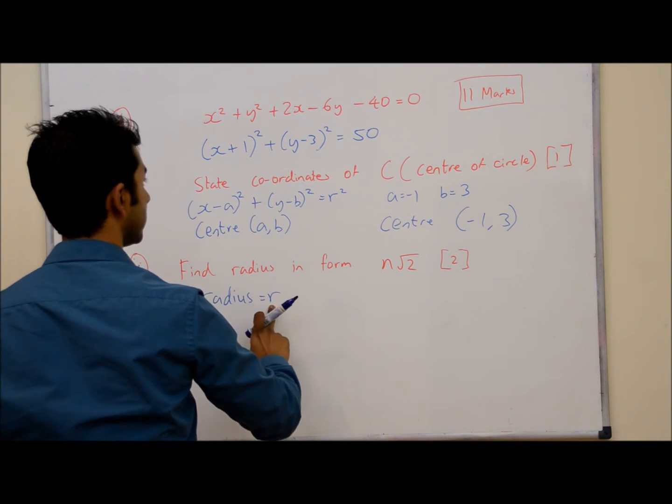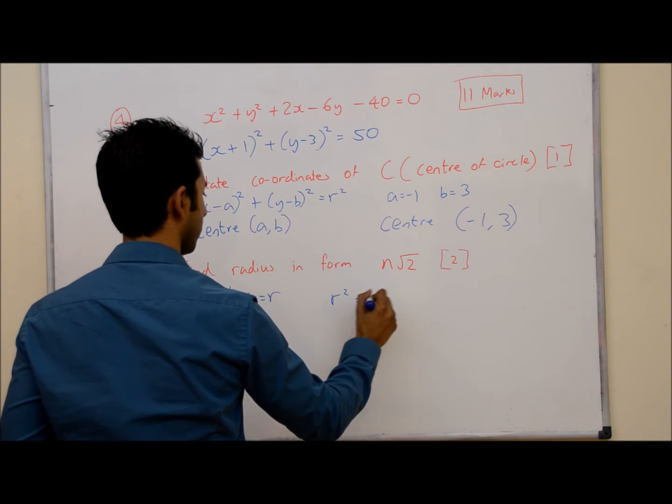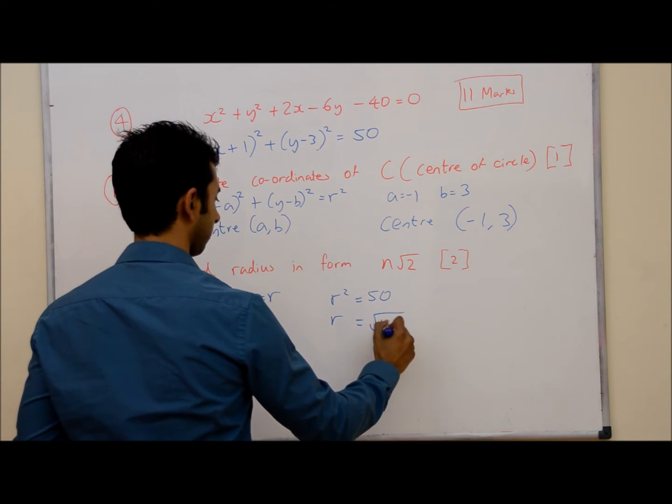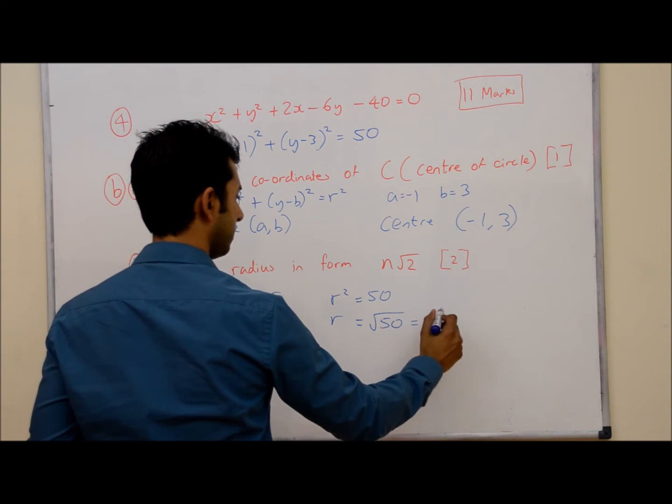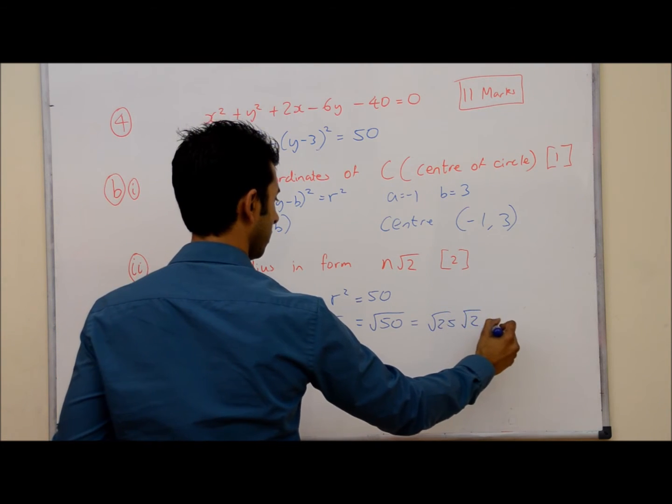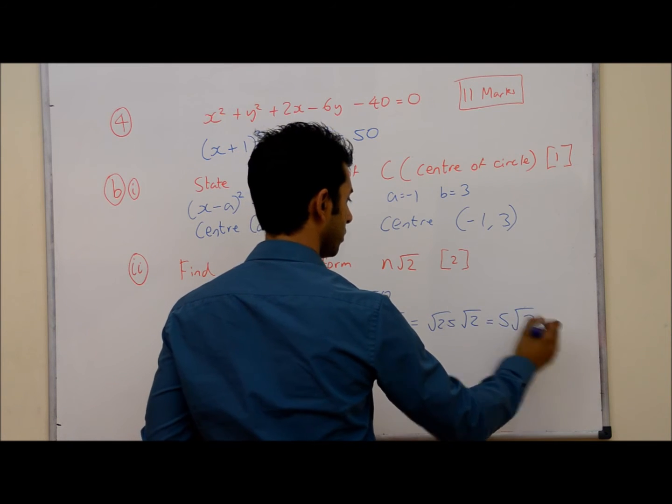So the radius is r and r² is 50. Let's write down r² equals 50. We need to work out r. So r will equal the square root of 50. And if we simplify this, we get root 25 times root 2. Root 25 is 5, so this is 5 square root 2.